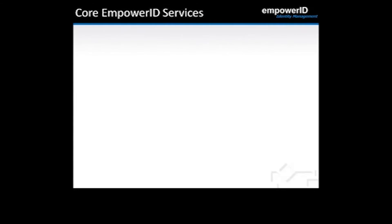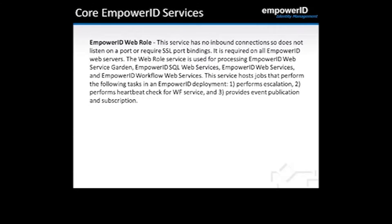The core Empower ID services are basically two. The Empower ID web role service, along with our worker role service, have no inbound connections — they don't listen on any ports or require port bindings. The web role service is required on all Empower ID web servers and is used for processing the Web Service Garden, SQL Web Services, Empower ID Web Services, and Workflow Web Services. It hosts jobs performing escalation, heartbeat checks for the workflow service, and event publication and subscription.